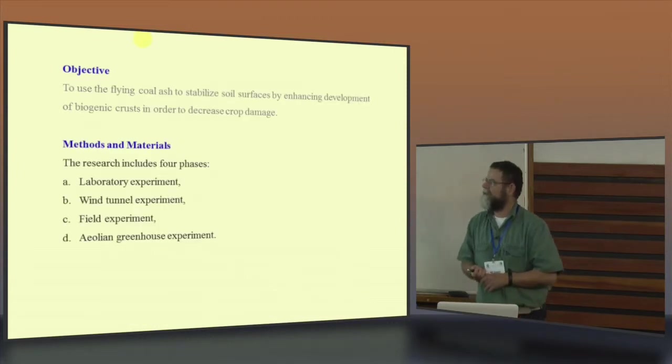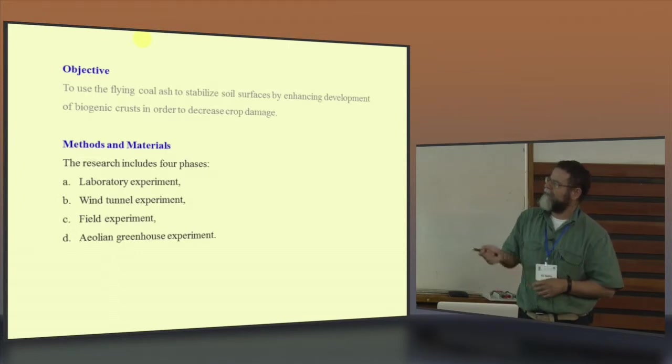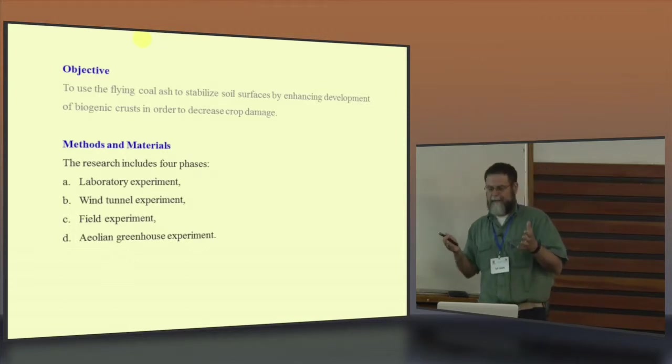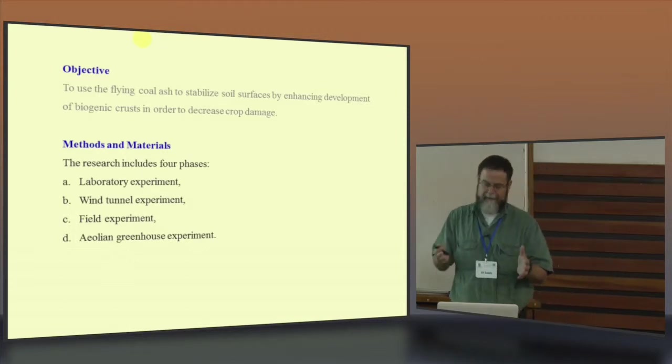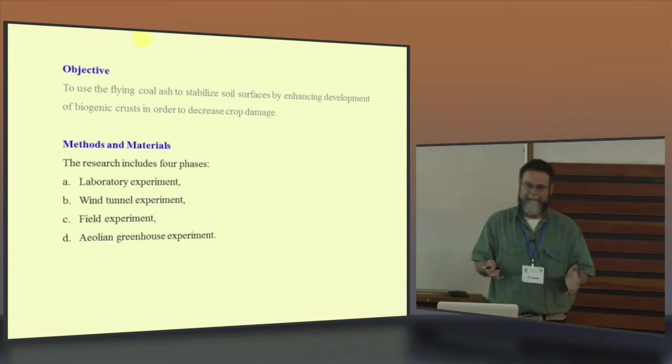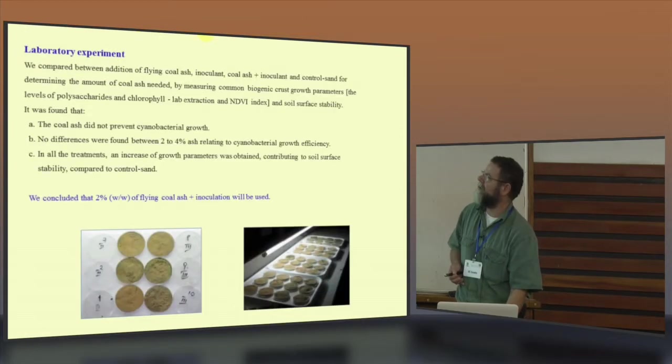So the research includes four facets: a laboratory experiment, wind tunnel experiment, field experiment, and aeolian greenhouse experiment. This has come only lately because we have a problem with this experiment. We started in the beginning not knowing what will happen to the cyanobacteria if we will add the coal ash. We didn't know how much the amount that we're going to use.